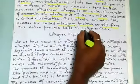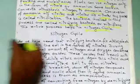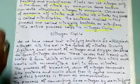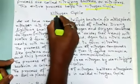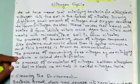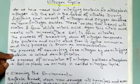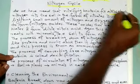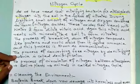The entire process is called the nitrogen cycle. This nitrogen fixation helps in the nitrogen cycle. Nitrifying bacteria fix atmospheric nitrogen into the soil in the form of nitrates.